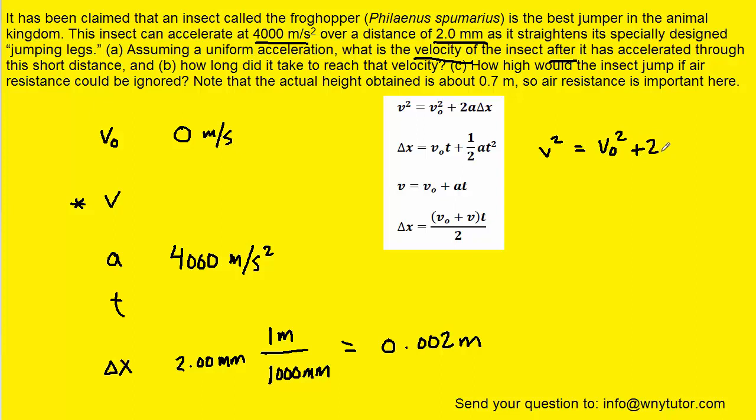So we'll go ahead and write it out over here. And we can solve for the final velocity by taking the square root on both sides of the equation. And so the final velocity will be this square root on the right-hand side. And then we can fill in the known values. We know the initial velocity is 0, we have the acceleration of 4000, and then the displacement is 0.002.